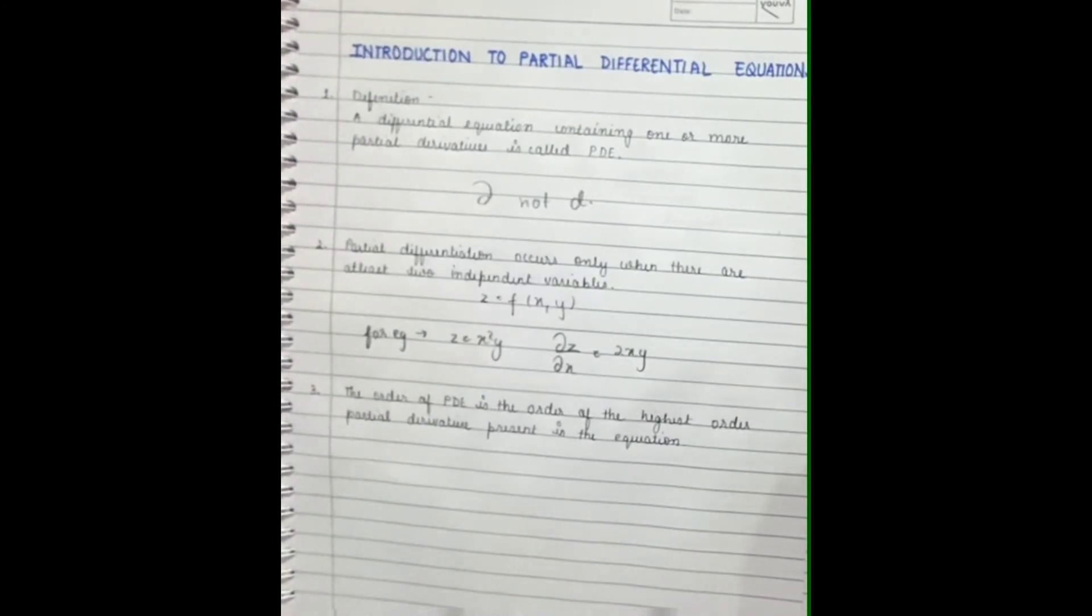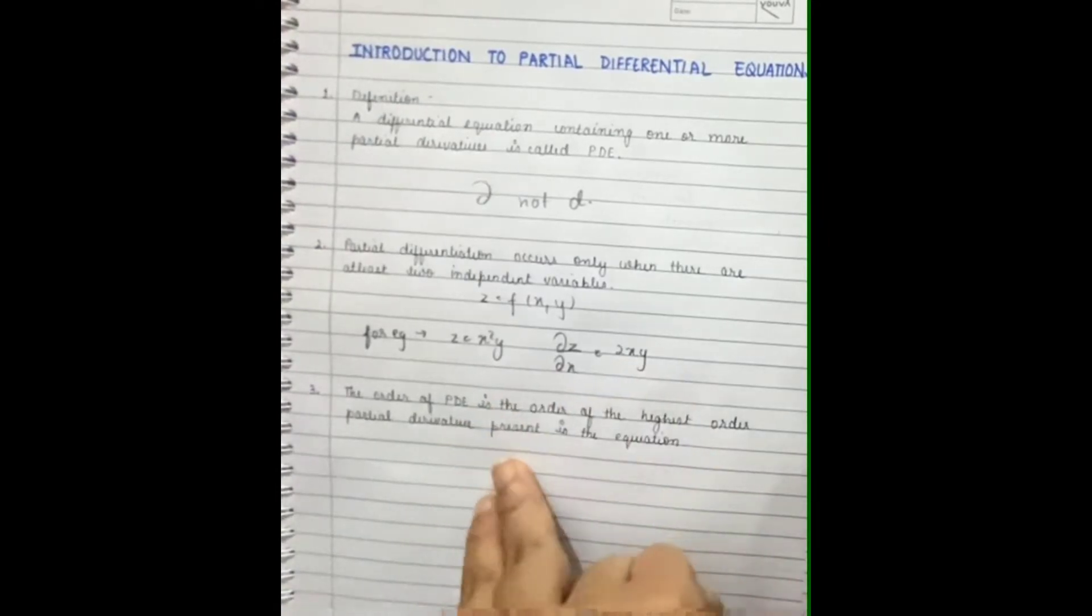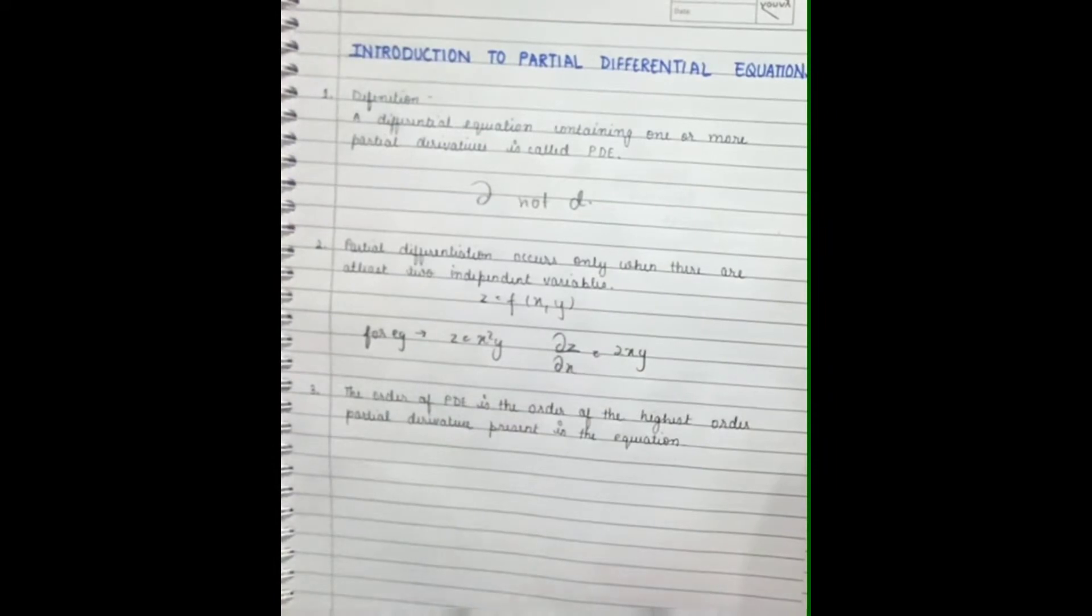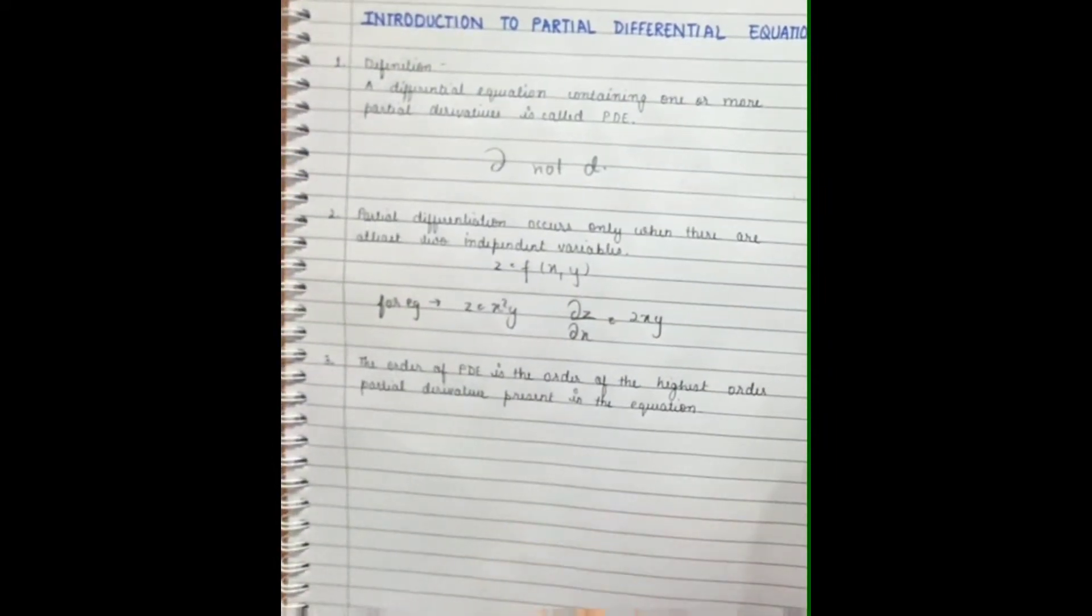By this we can say that PDE occurs only when there are at least two independent variables, because Y and X are independent of Z. The order of PDE is the order of the highest order partial derivative present in an equation.